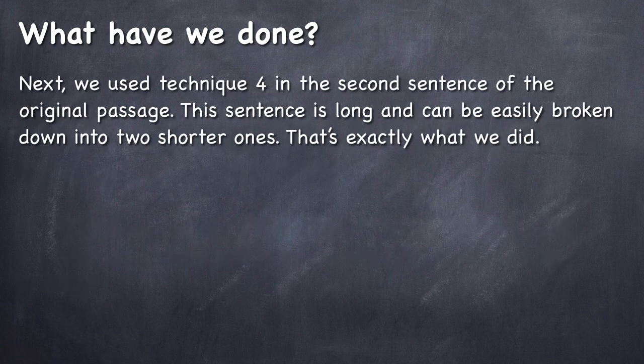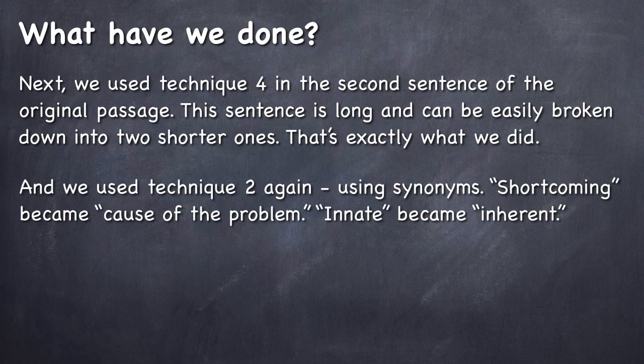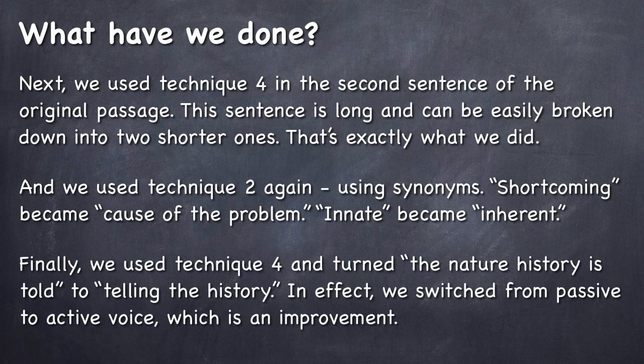Next, we use technique 4 in the second sentence of the original passage. This sentence is long and can be easily broken down into two shorter ones. That's exactly what we did. And we use technique 2 again, using synonyms. Shortcoming became cause of the problem. Innate became inherent. And finally, we use technique 4 and turned the nature history is told to telling the history. So in effect, we switched from passive to active voice, which is an improvement.